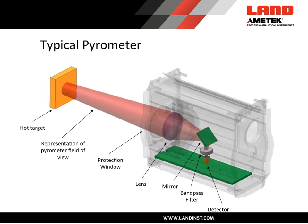Now let's look at a typical pyrometer and what goes into its design. Within the pyrometer body is a radiation detector. Usually in front of the detector is a bandpass filter which allows you to tune the response of that detector to certain wavelengths. In this particular design there is a front-faced mirror bending the ray cone towards the lens, a lens, a protection window, and a representation of the pyrometer's field of view going out into the distance and looking at a hot target.